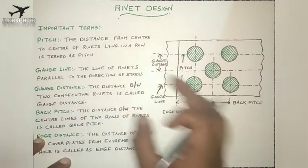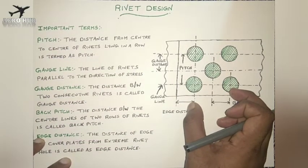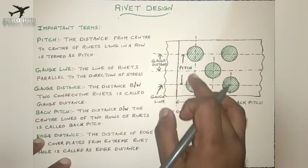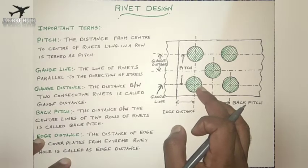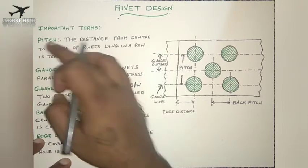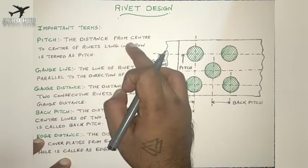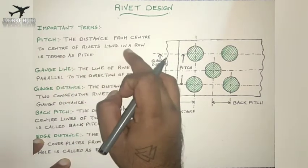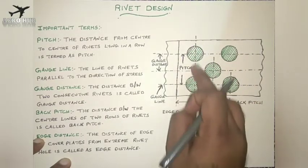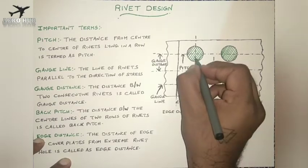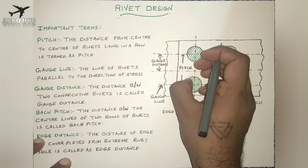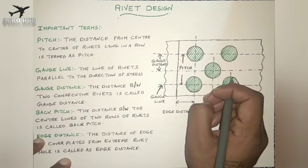The first term is pitch. You can see a diagram here — a combination of plate with rivet. The first and one of the most important terms is called pitch. As written here, the distance from center to center of rivets lying in a row is termed as pitch. The distance between the centers of two rivets lying in the same row is called pitch, and this line is called the pitch line or pitch length.